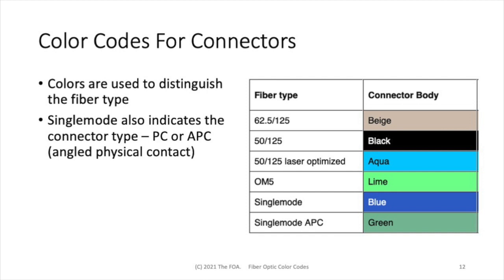Single-mode connectors are either blue or green, but the difference is the type of polish on the connector ferrule. Standard physical contact or PC single-mode connectors will be blue, but angle-polished APC connectors will be green. And it's very important not to mix these two up, because mating them can be damaging to both connectors.